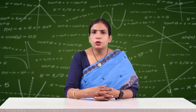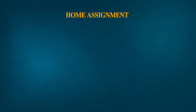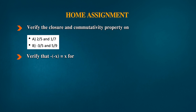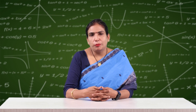In today's session we discussed two properties for rational numbers — revise them and verify for different rational numbers. Home assignment: verify the closure and commutative property for (1) 2/5 and 1/7, (2) -3/5 and 5/9. Question 2: verify that -(-x) = x for (1) x = 11/5 and (2) x = -13/17. This is all from the first session — keep practicing, happy learning, goodbye.